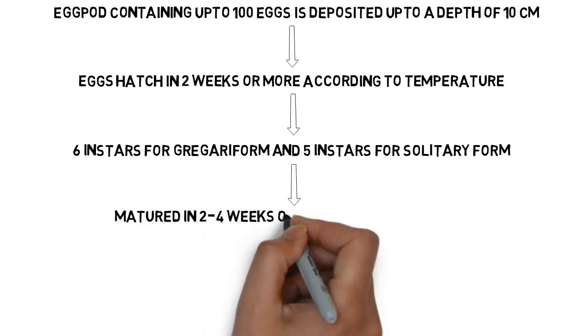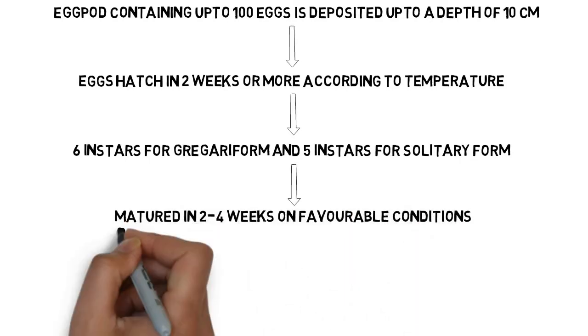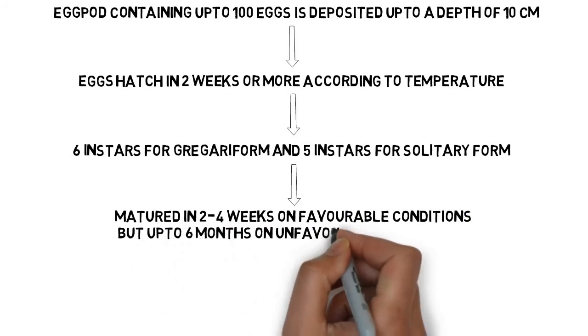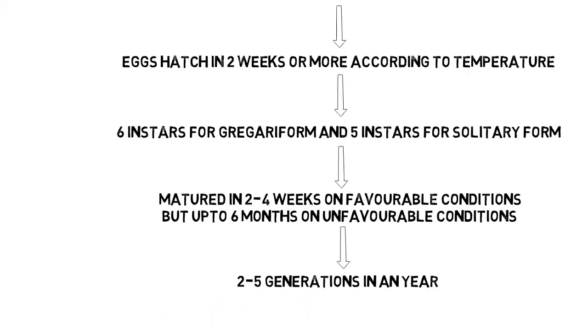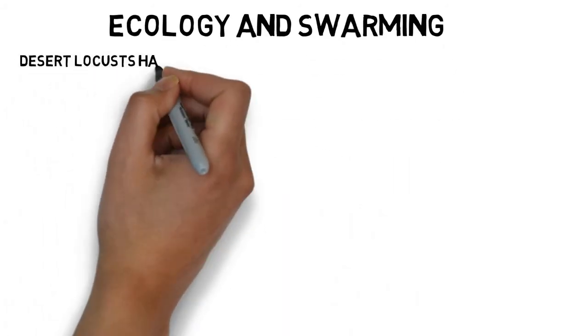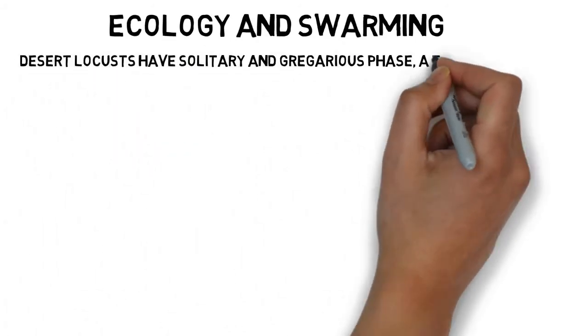Maturation can occur in two to four weeks when food supply and weather conditions are suitable, but may take up to six months when they are less ideal. There are two to five generations in a year. Ecology and swarming: desert locusts have solitary and gregarious phases, a type of polyphenism.